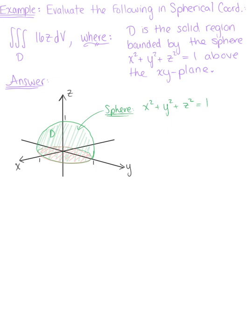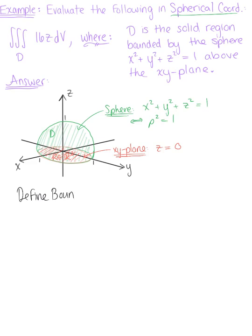Keeping in mind that we want to use spherical coordinates, this is equivalent to rho squared being equal to 1. This region is also bounded below by the xy plane. We need the bounds on rho, phi, and theta.